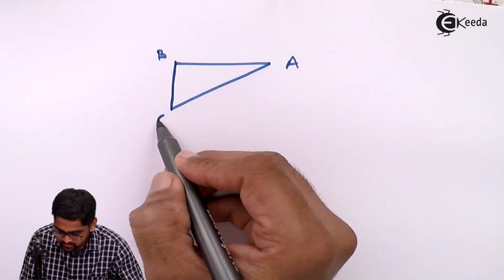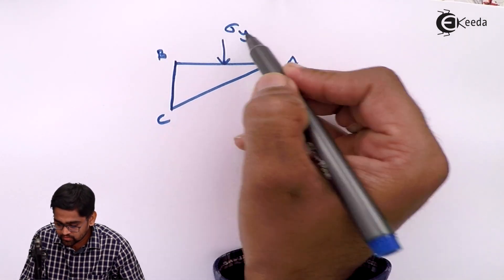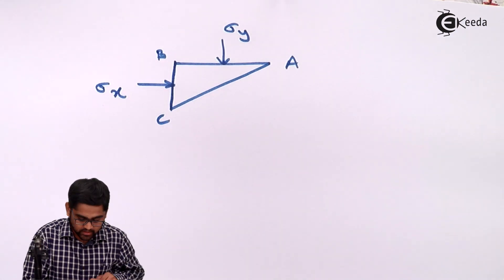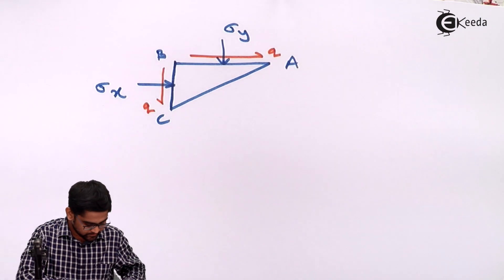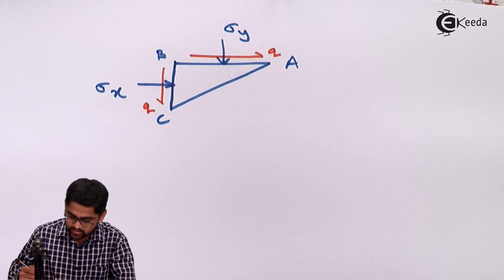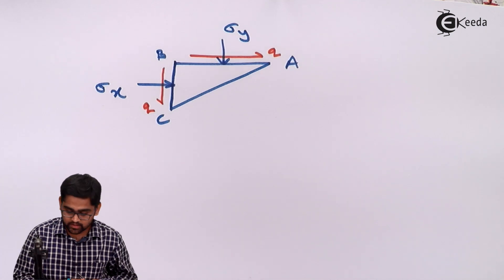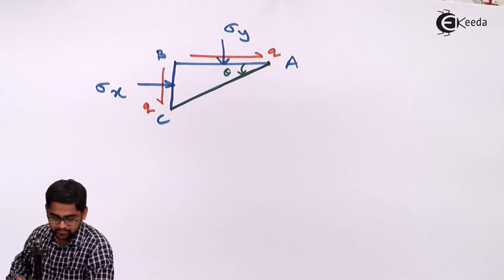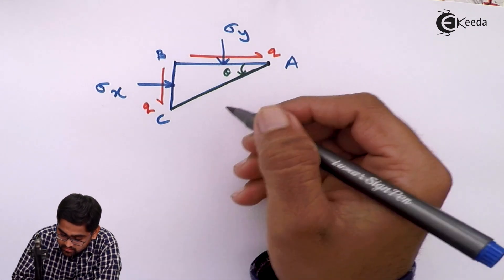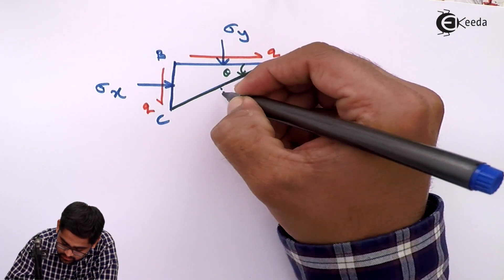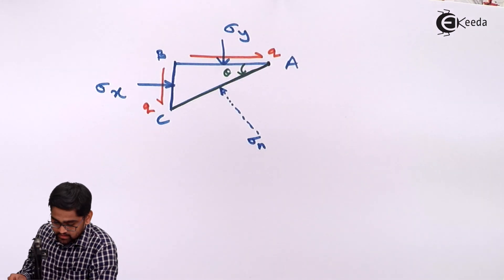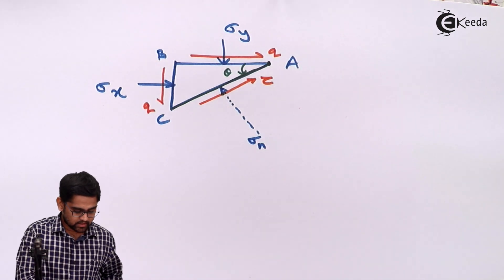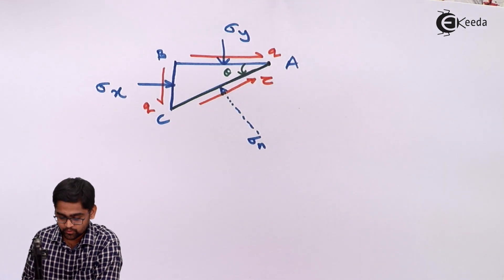In diagram ABC, the sigma y value acts on one face, sigma x on another, and the shear stresses q act on the respective faces. This is an internal plane located at an angle theta from point A — not a failure plane. On this plane AC, the normal stress sigma n and tangential stress tau act. These are the stresses acting on this plane AC at angle theta with respect to AB.